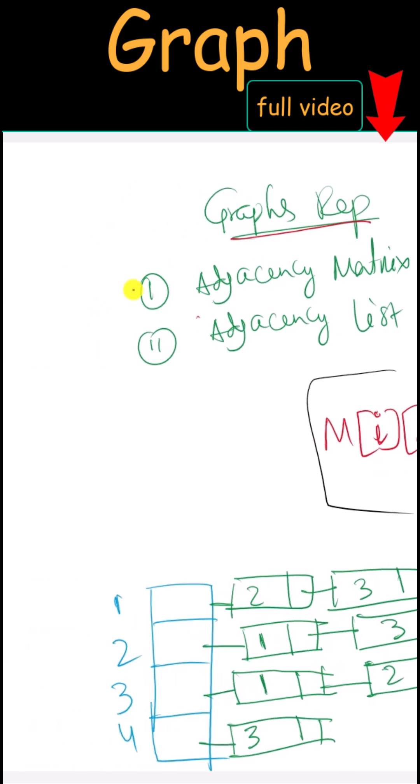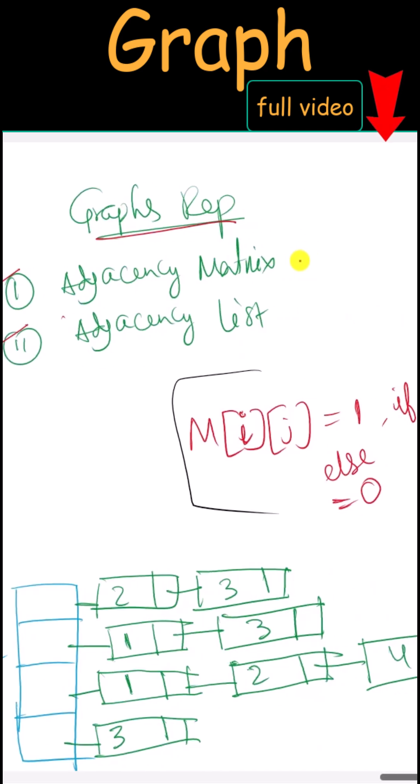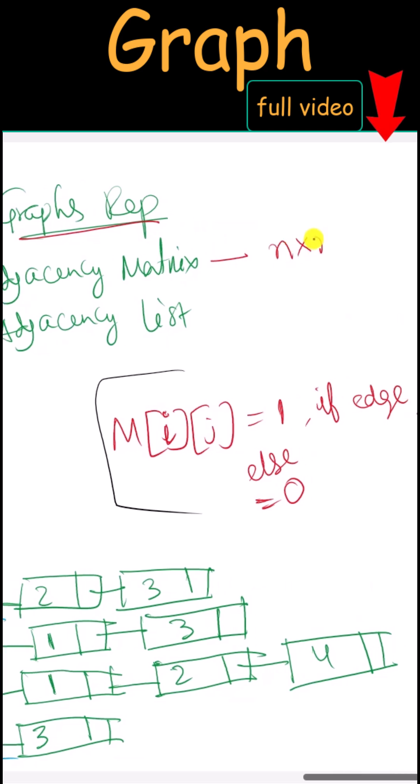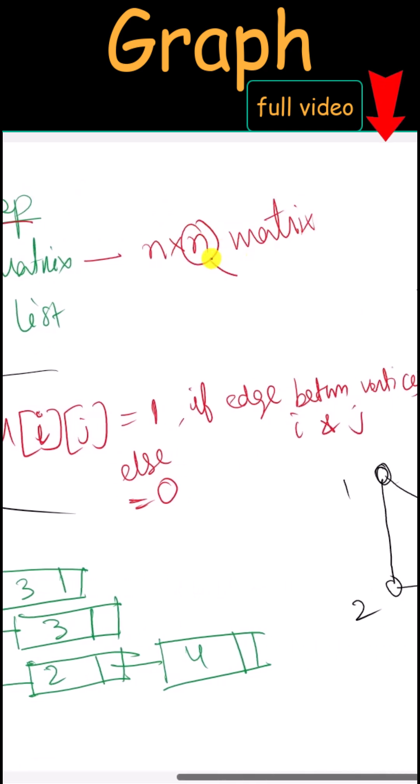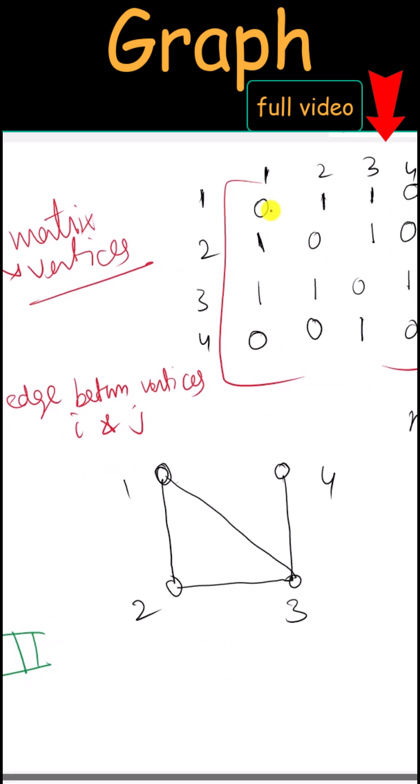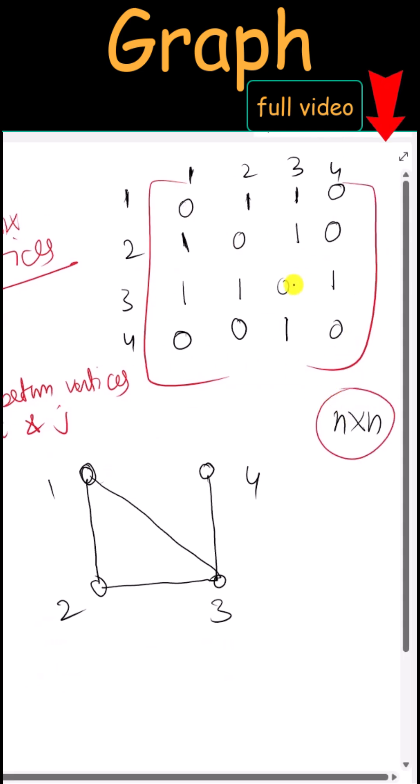Graphs can be represented using either the adjacency matrix or the adjacency list. An adjacency matrix is an n by n matrix, where n is the number of vertices in the graph. For example, here we have an n by n matrix.